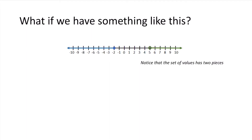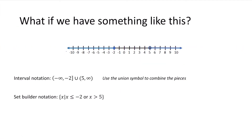What if we have a domain represented in two pieces? For example, a piece going from negative 2 to negative infinity, and another piece going from 5 to positive infinity. If we're using interval notation, we need to use the union symbol to combine the two pieces, because x can be from negative infinity to negative 2, or from 5 to positive infinity. In set builder notation, we would just use "or" — we would say x such that x is less than or equal to negative 2, or x is greater than 5.